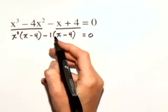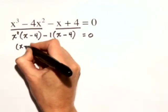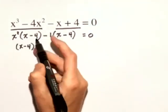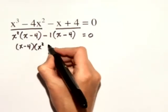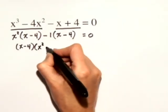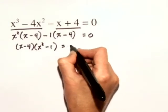Now we have a common factor of x minus 4. From our first term, we have left x squared, and from our second term, we have left minus 1. x squared minus 1 is equal to 0.